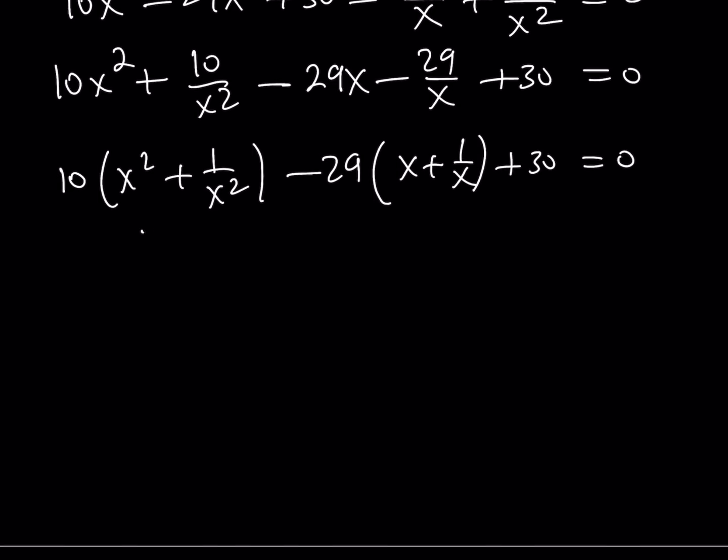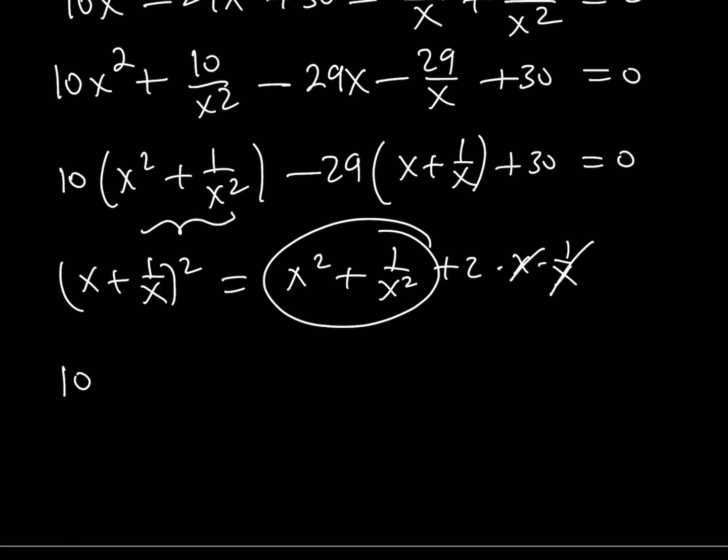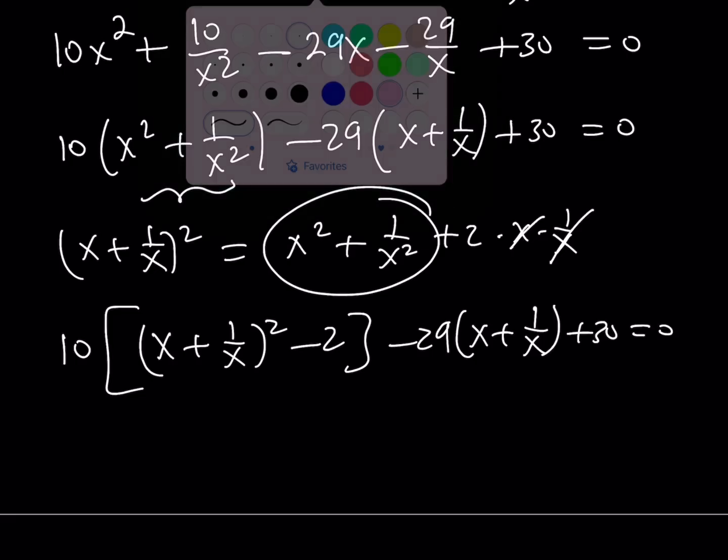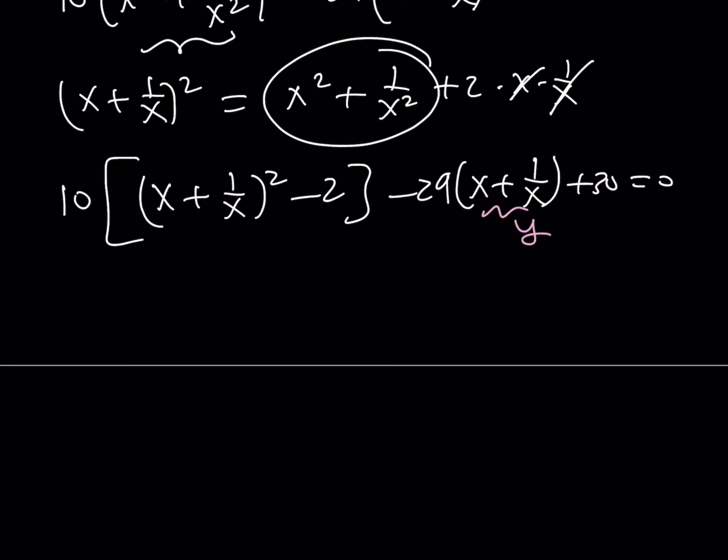This is going to be nicer if we write it as 10 times the quantity x squared plus 1 over x squared. And these two as negative 29 times x plus 1 over x plus 30. I hope you see what I see. This can be expressed in terms of x plus 1 over x, because if you square x plus 1 over x, you get x squared plus 1 over x squared plus 2. You can basically write the x squared plus 1 over x squared as x plus 1 over x quantity squared minus 2. And at this point, we can use substitution and call this y. And we get 10 times y squared minus 2 minus 29y plus 30 is equal to 0.